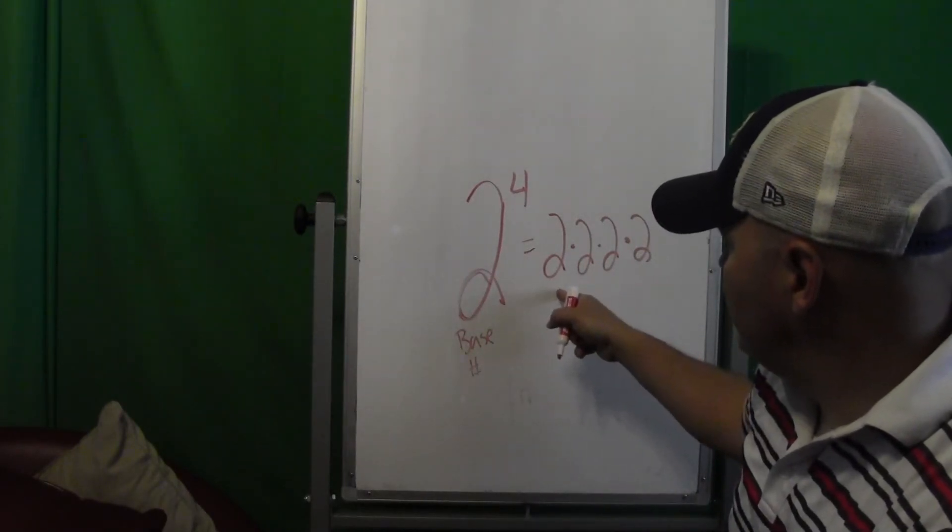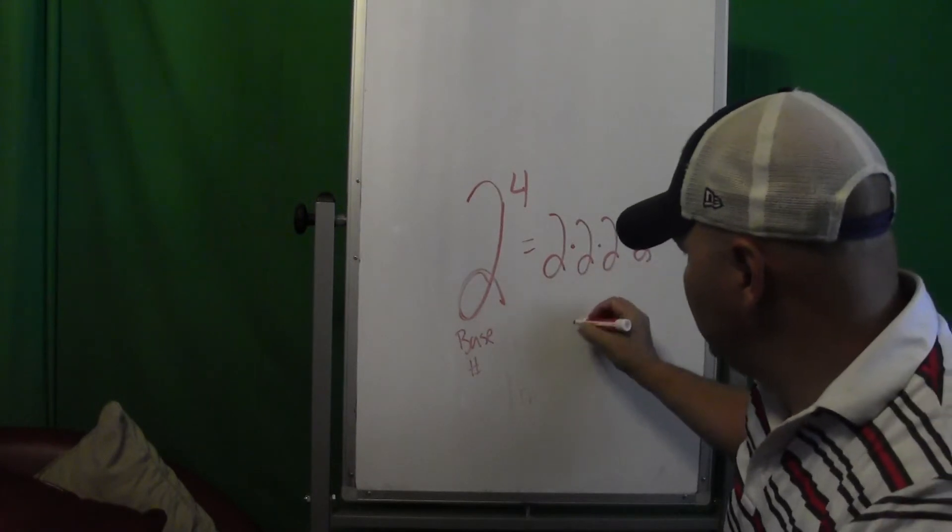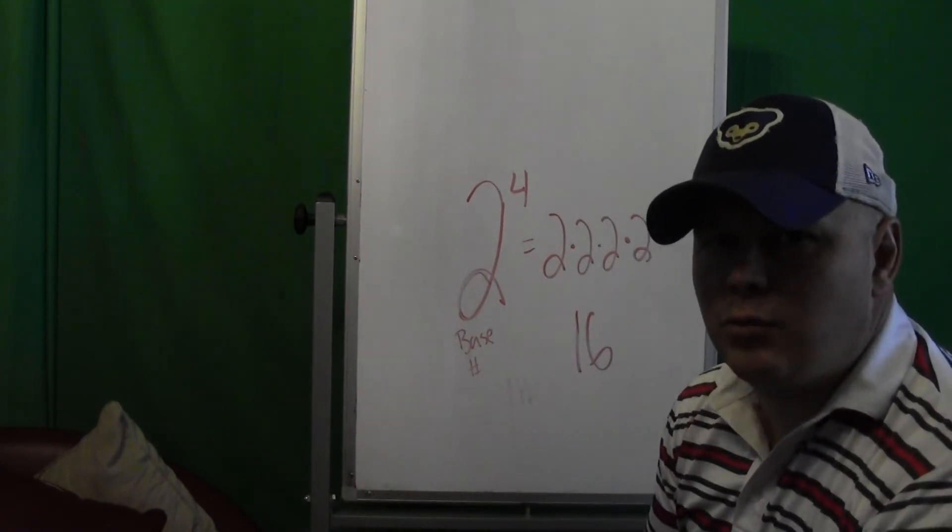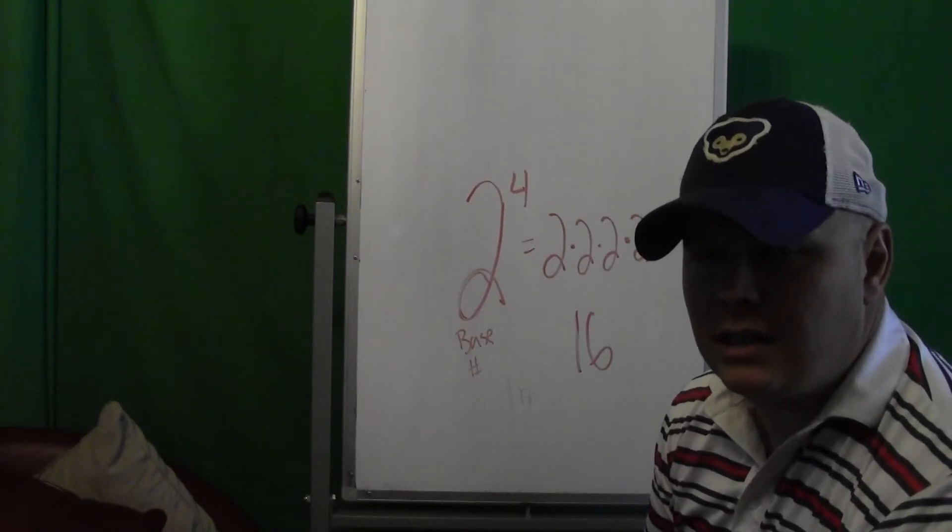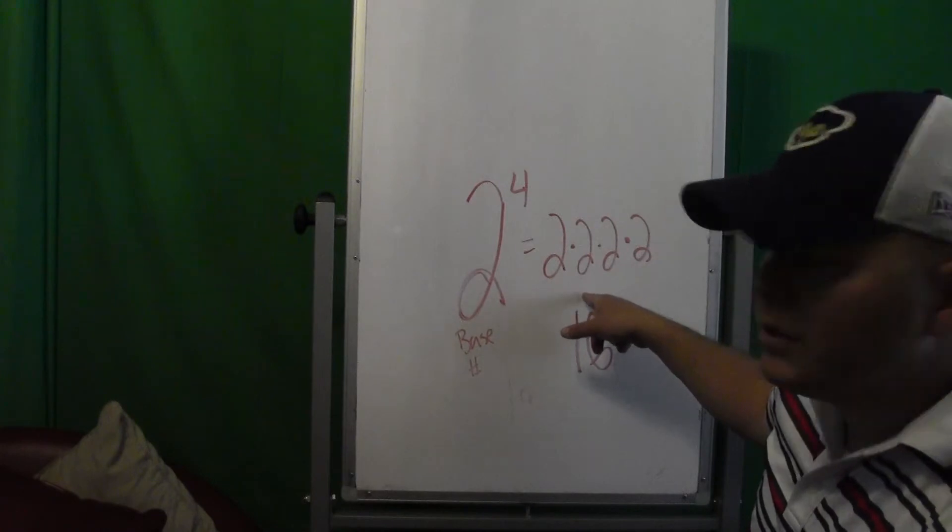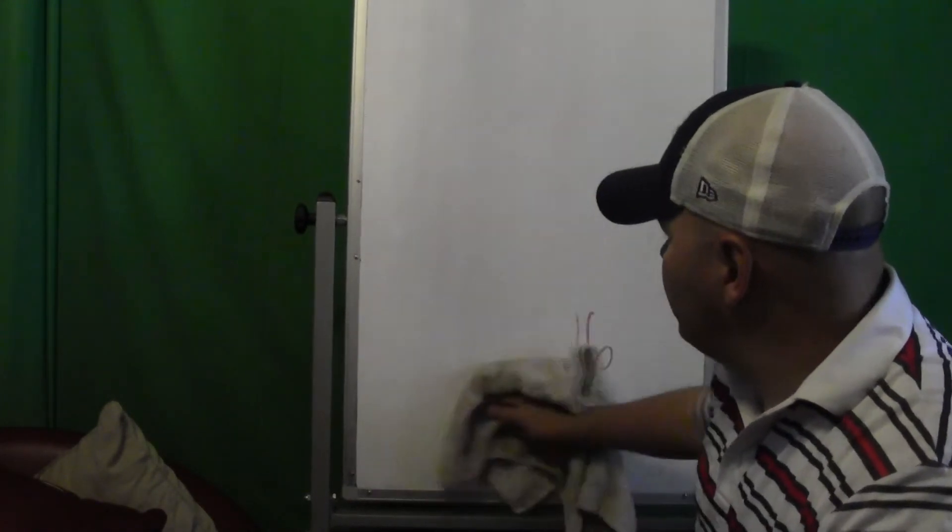So in this case this would be 2 times 2 is 4, times 2 is 8, times 2 is 16. So while the answer is 16 if it just says what's 2 to the fourth, it'd be 16. But if it says write 2 to the fourth in expanded form, you're going to want 2 times 2 times 2 times 2.